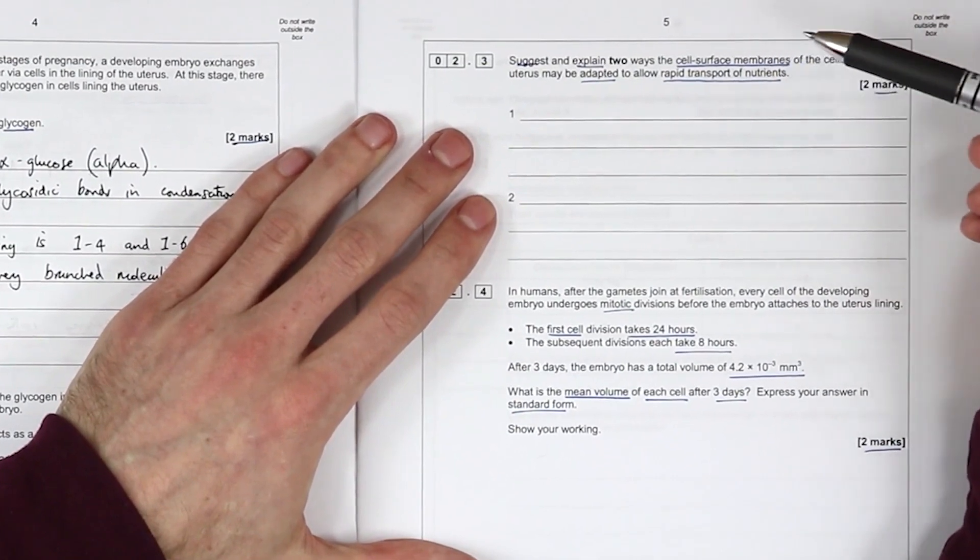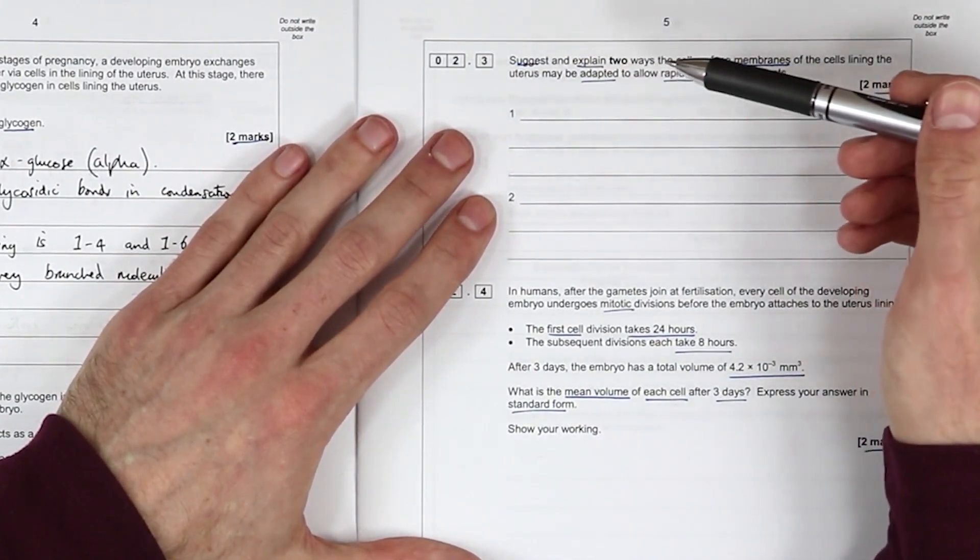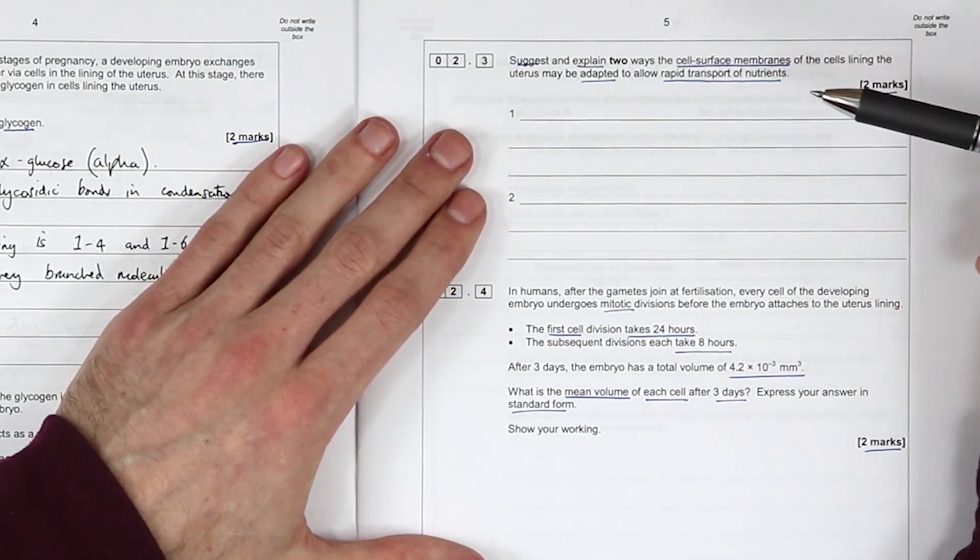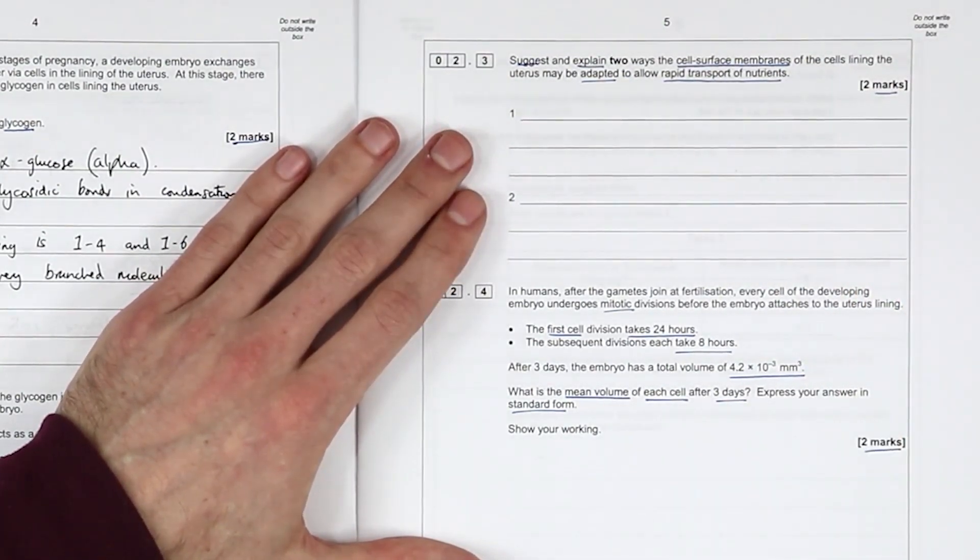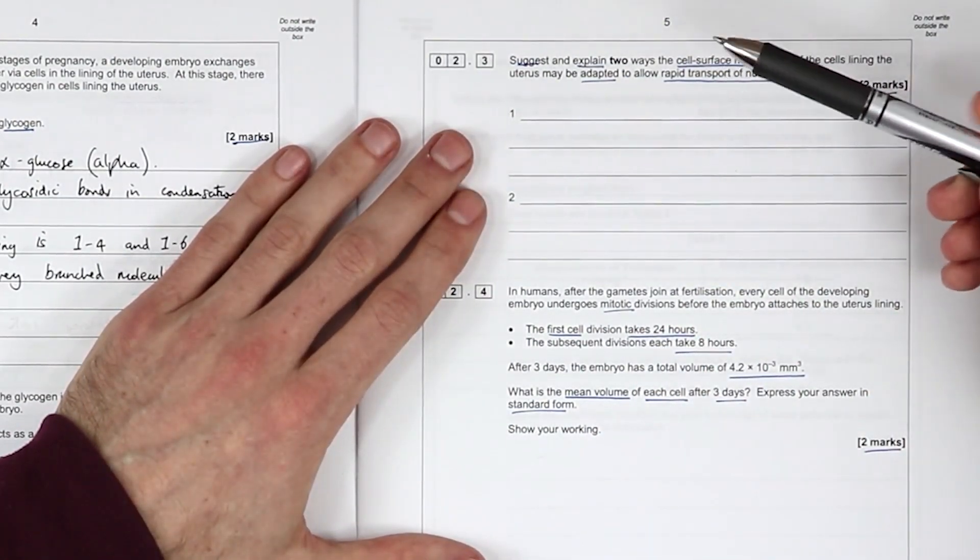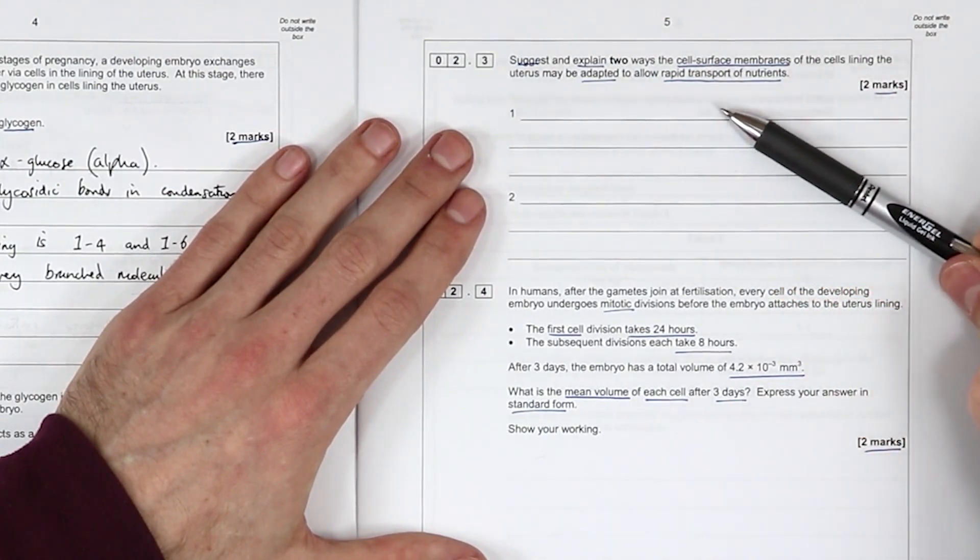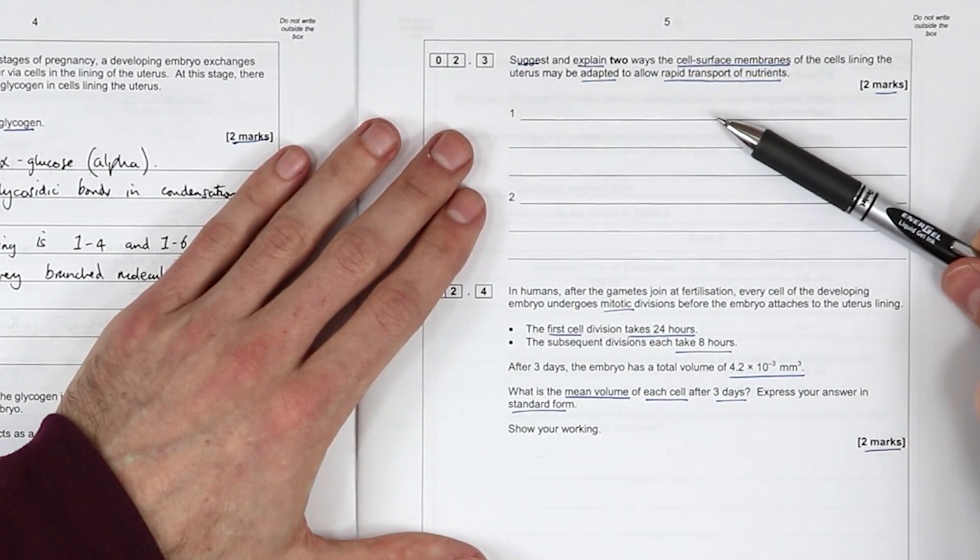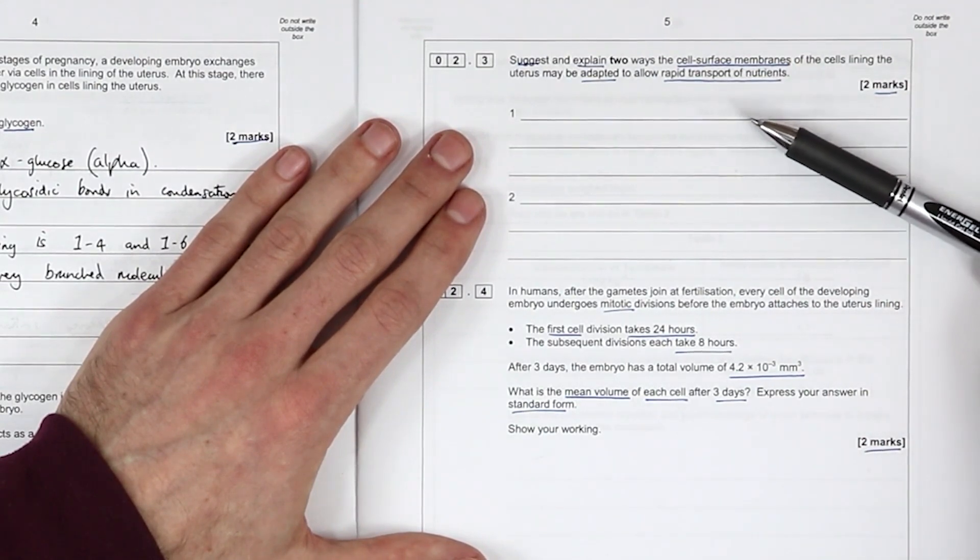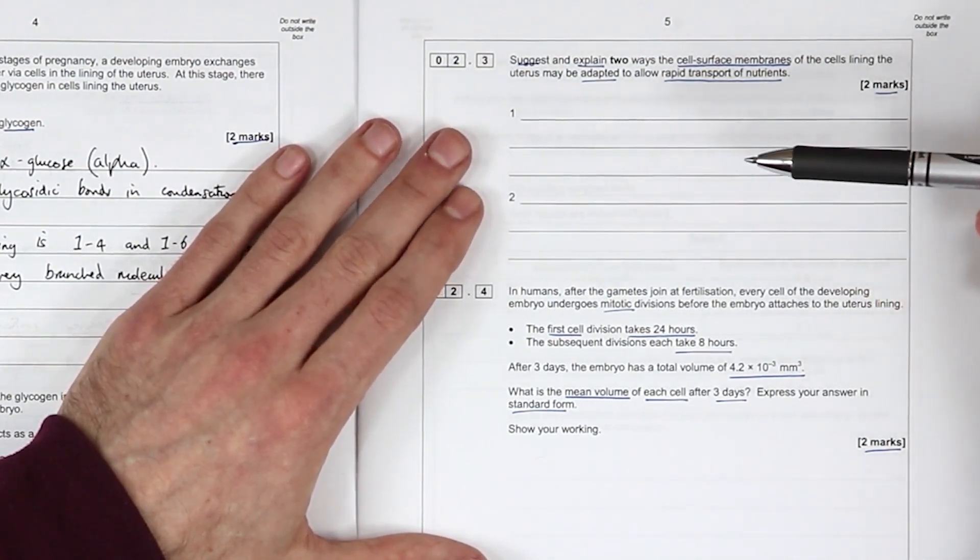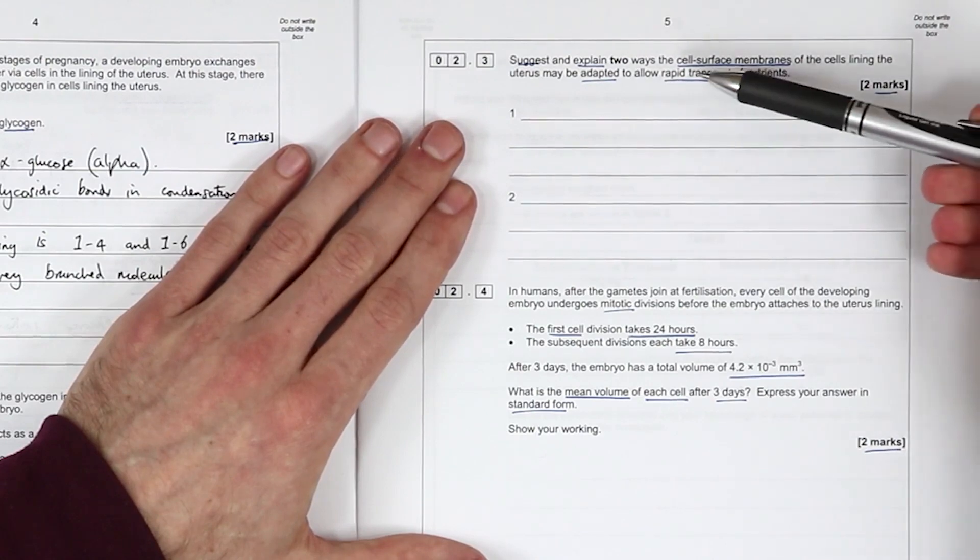Suggest and explain two ways that the cell surface membrane of the cell lining of the uterus may be adapted to allow rapid transport of nutrients. So there's a cell membrane and we've got to suggest and explain transport of nutrients. I'm going to pick my nutrients first. So we could say carrier proteins for co-transport or for the absorption of glucose. We probably don't have to say co-transport with sodium. I actually don't know whether this is with a co-transporter or just straight up facilitated diffusion. We might want to then, maybe in fact, we should go with two different things.